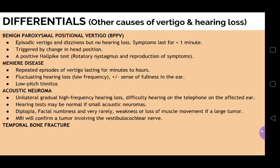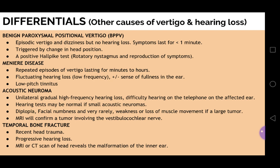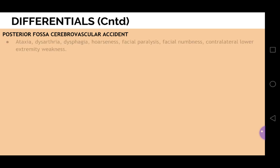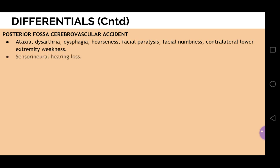We should also keep in mind trauma — temporal bone fracture can also cause hearing loss, which is of progressive nature, so take a history of recent head trauma. MRI and CT scan are helpful to identify any malformation of the inner ear. Some other differentials: posterior fossa cerebrovascular accident can lead to a different range of symptoms — ataxia, dysarthria, dysphagia, hoarseness, facial paralysis, facial numbness, contralateral lower extremity weakness, and sensorineural hearing loss. Romberg test is negative; CT/MRI will confirm the diagnosis.